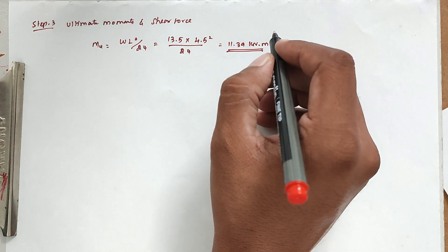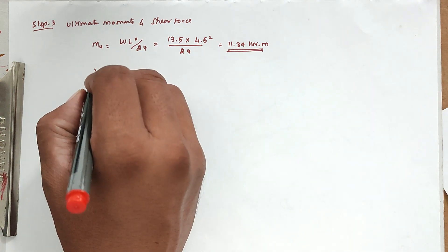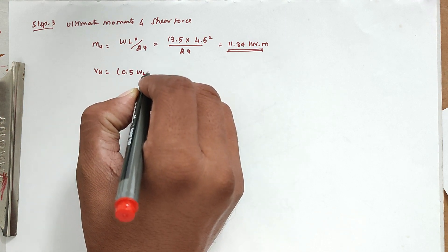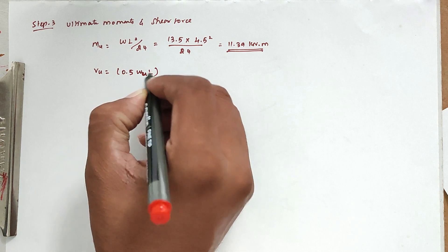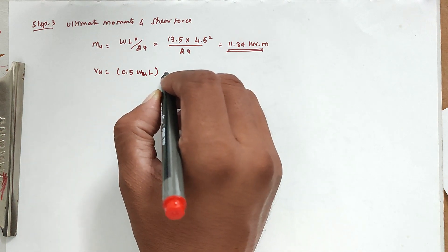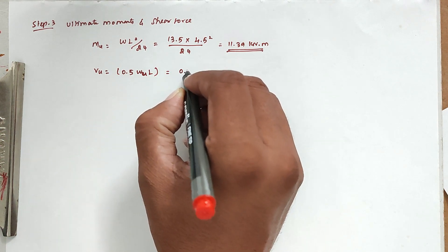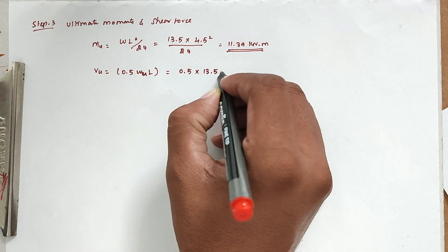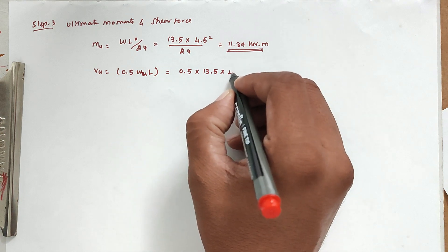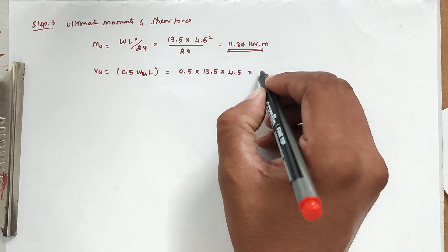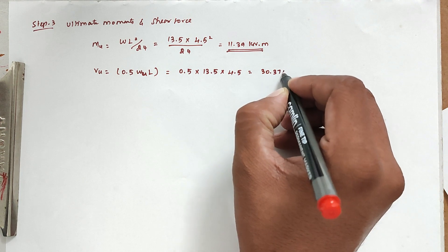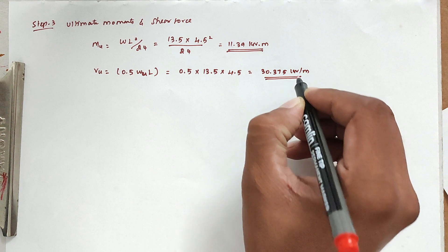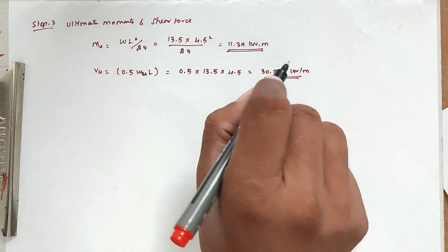Shear force: Vu = 0.5 × wu × L = 0.5 × 13.5 × 4.5 = 30.375 kN/m. This is the ultimate shear force.